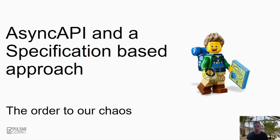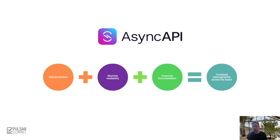So in order to bring order to the chaos, we decided to use AsyncAPI, which is a specification or standard designed specifically for event-driven architecture. AsyncAPI enables you to define and document message-driven APIs in a format that is machine-readable, much like the OpenAPI specification. And much like the OpenAPI specification, it allows you to describe the functionality of your API and how consumers can interact with it.